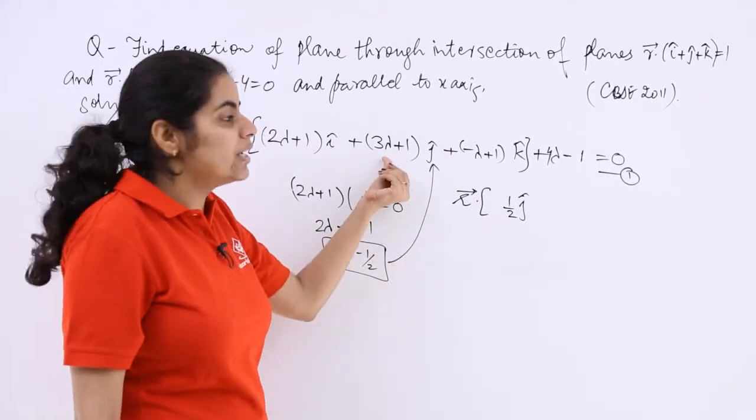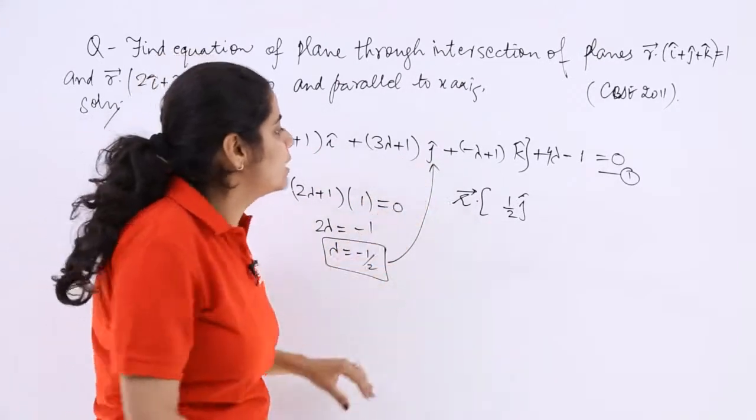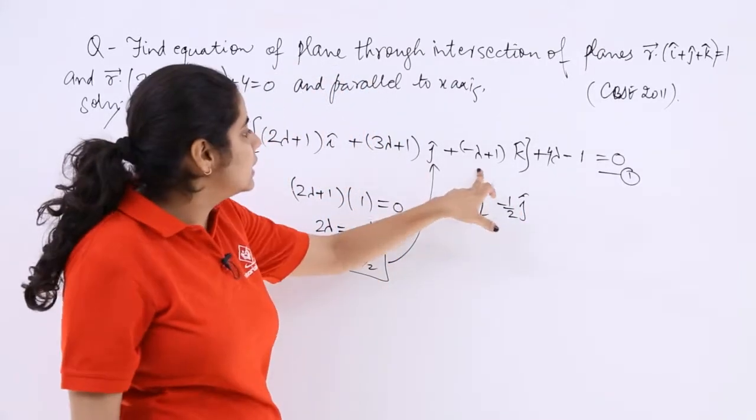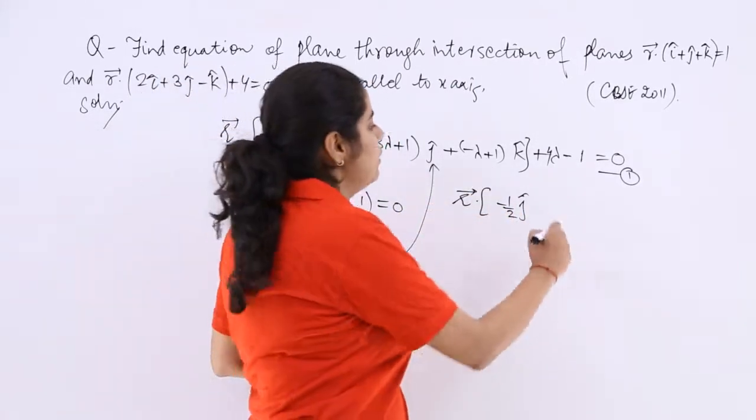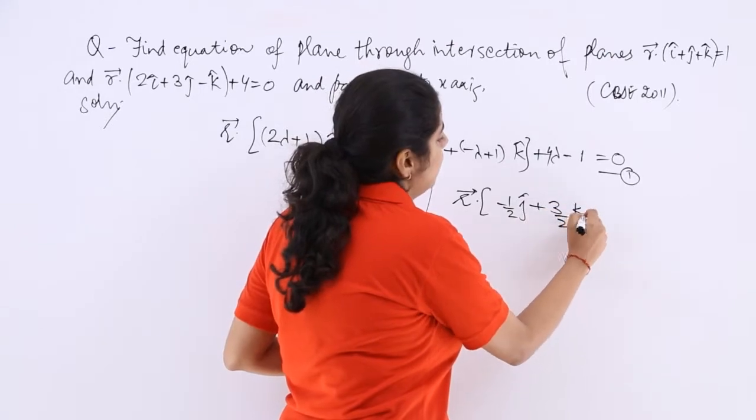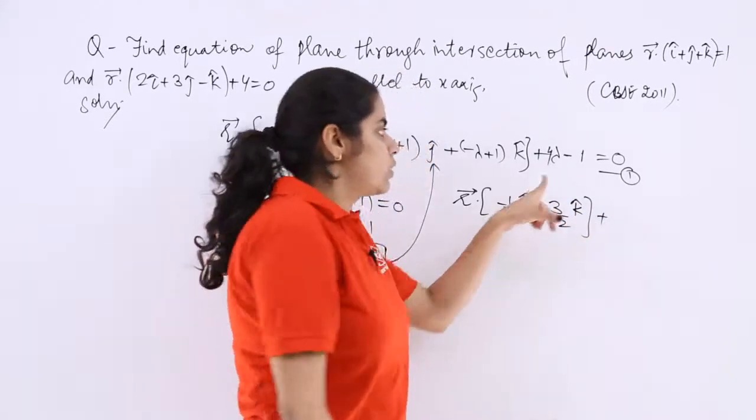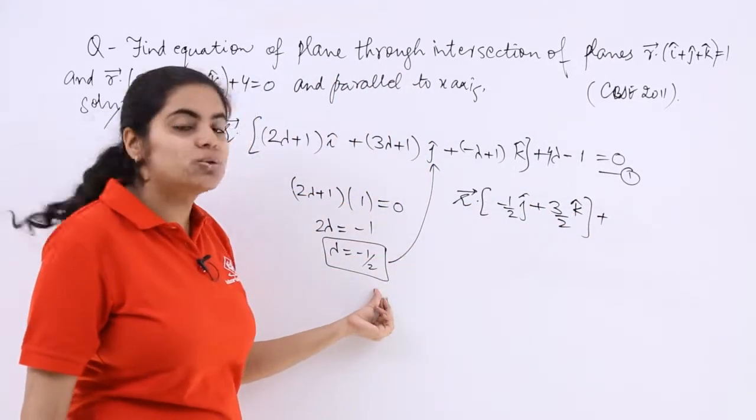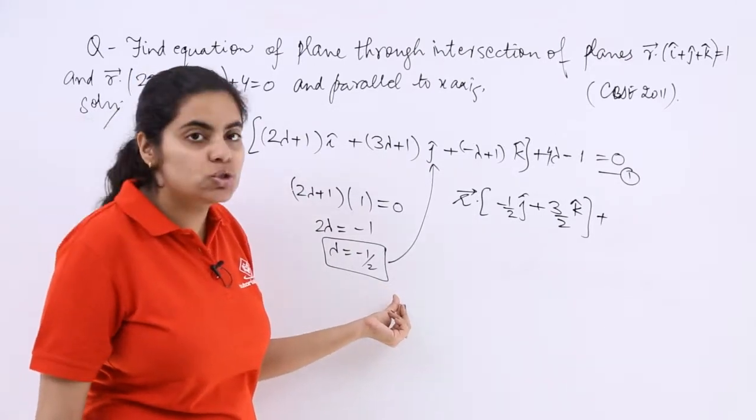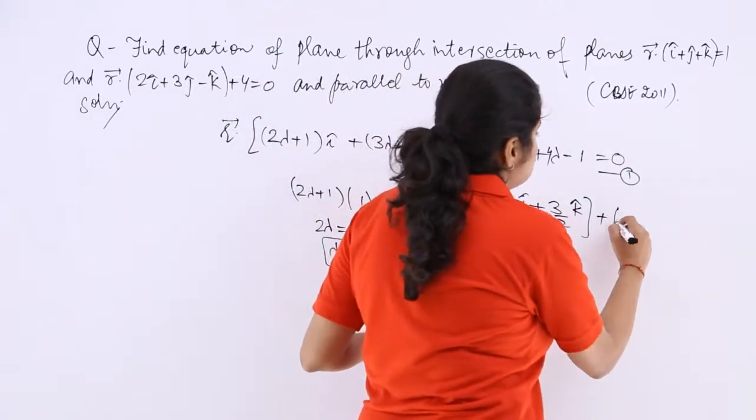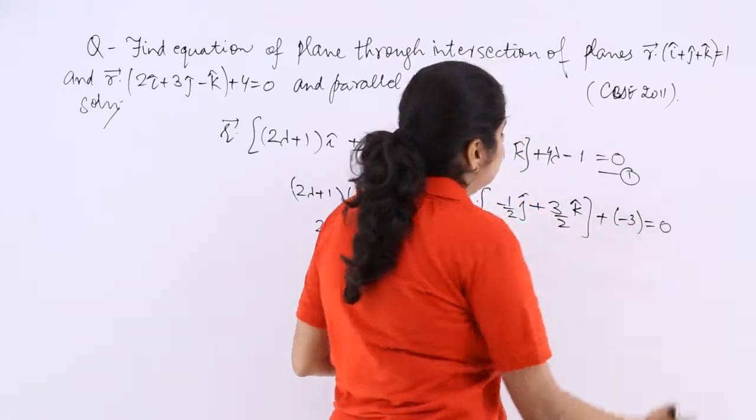3 into minus 1 by 2 is minus 3 by 2; minus 3 by 2 plus 1 is minus 1 by 2, and here it is 1 by 2 plus 1 which is plus 3 by 2 k cap. Now plus 4 lambda: 4 into minus 1 by 2 is minus 2, and minus 2 minus 1 is minus 3, which equals 0.